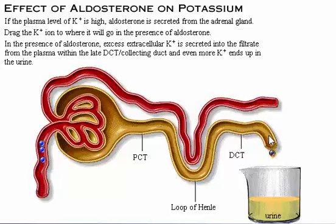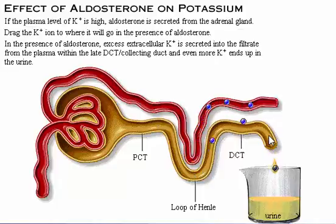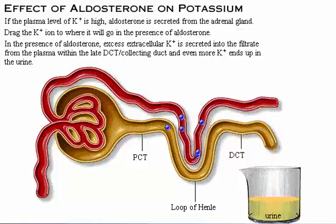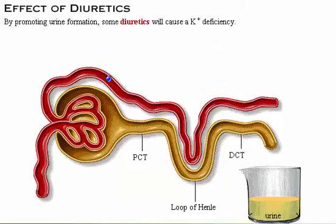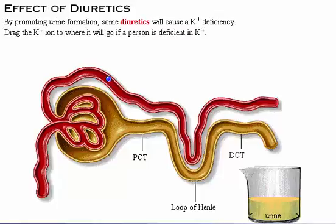In the presence of aldosterone, excess extracellular potassium is secreted into the filtrate from the plasma within the late distal convoluted tubule and collecting duct, and even more potassium ends up in the urine. By promoting urine formation, some diuretics will cause a potassium deficiency. Drag the potassium ion to where it will go if a person is deficient.